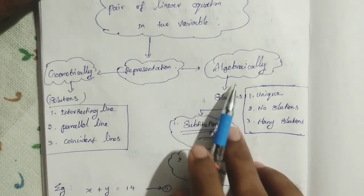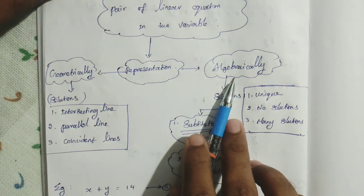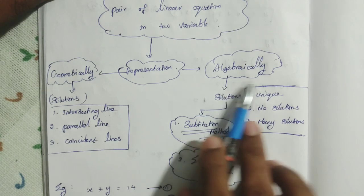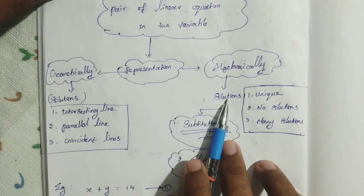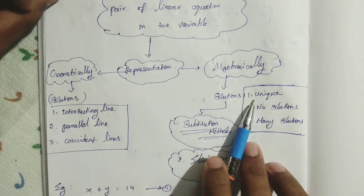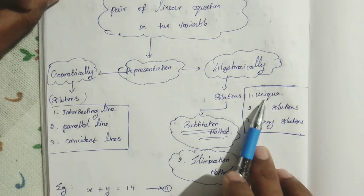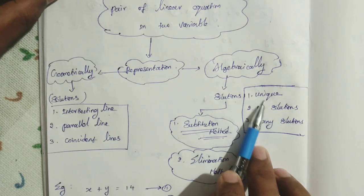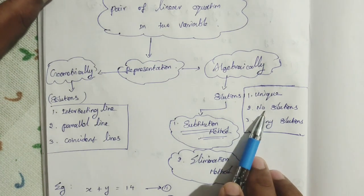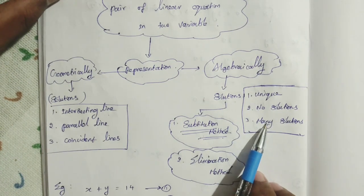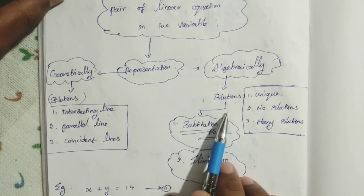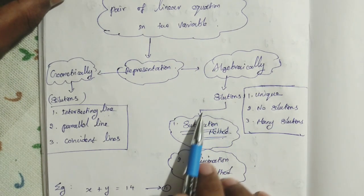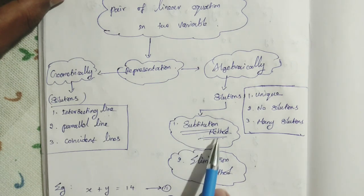For the algebraic method, we represent the pair of linear equations algebraically — the given situation into equation form — and then find the solution. The solutions are called unique solution, no solution, or many solutions. An intersecting line gives a unique solution. A parallel line gives no solution. A coincident line gives many solutions.